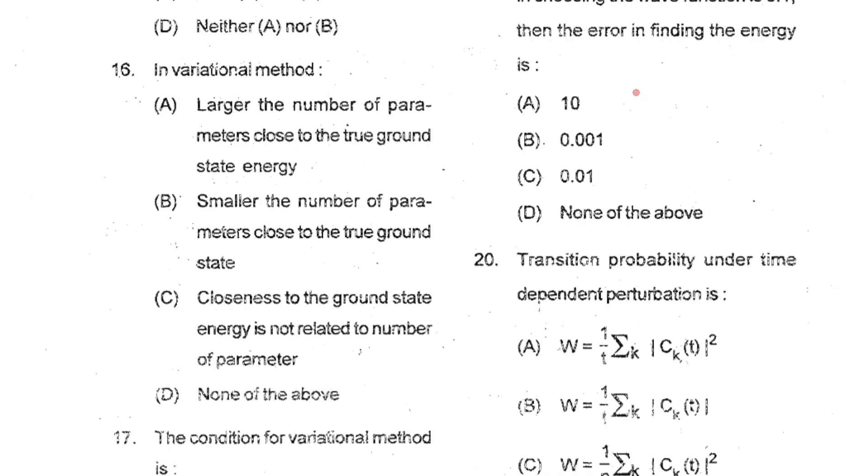In the variational method of quantum mechanics, the choice of trial wave function ψ is crucial in approximating the ground state energy of a quantum system. A more flexible trial wave function with a large number of parameters allows for a better approximation to the true ground state energy. With a larger number of parameters in trial wave function, you can potentially capture more detailed features of the system and adjust the shape of the wave function to better match the actual ground state wave function. This can lead to a closer approximation to the ground state energy. So A is your correct option.